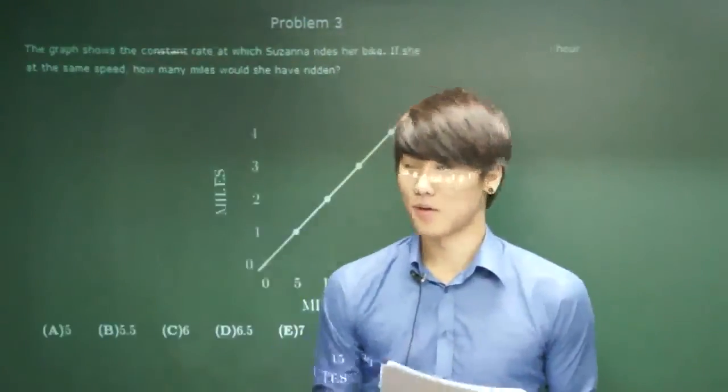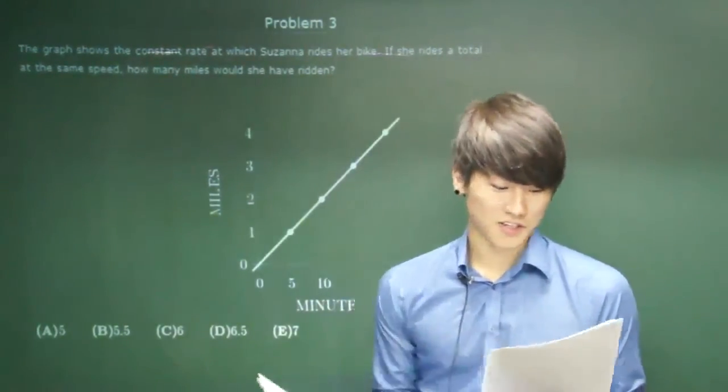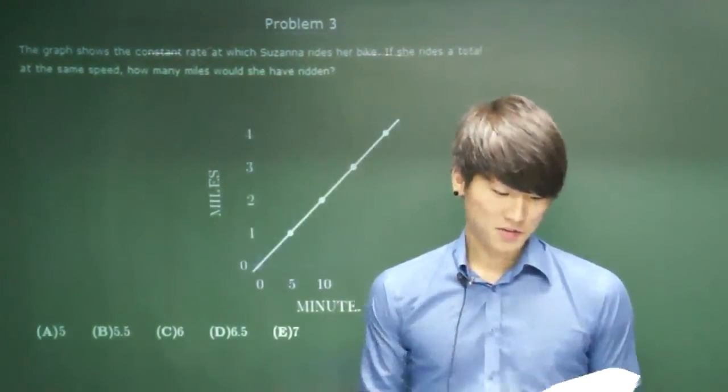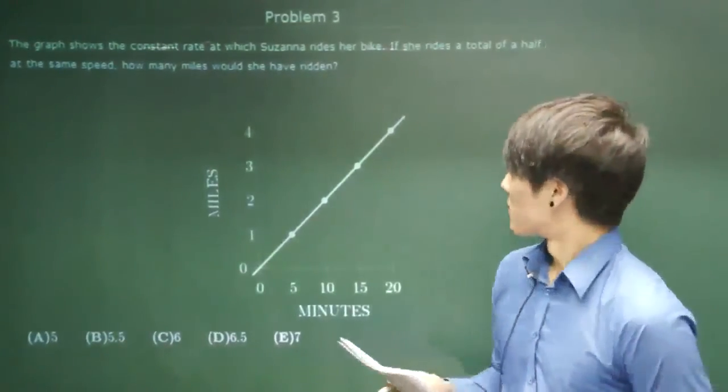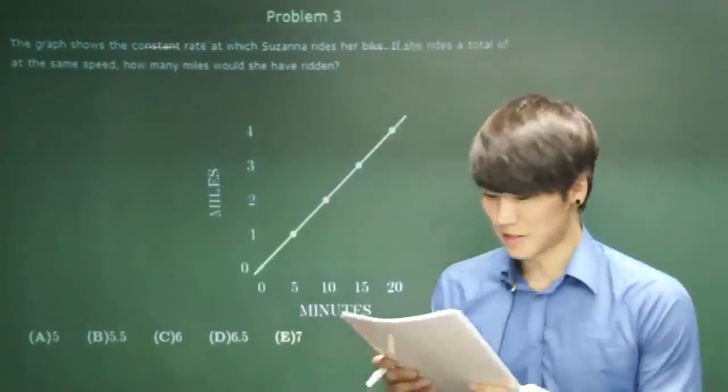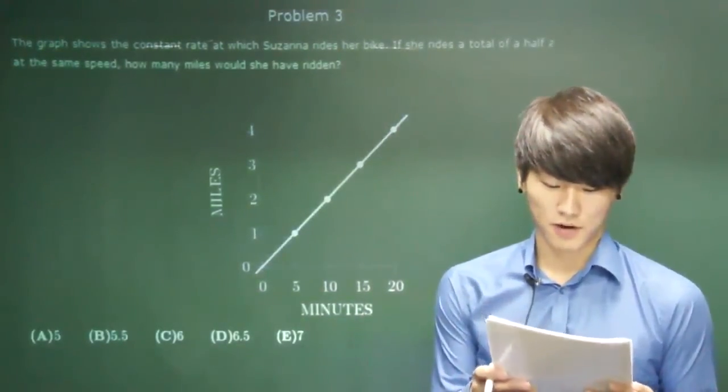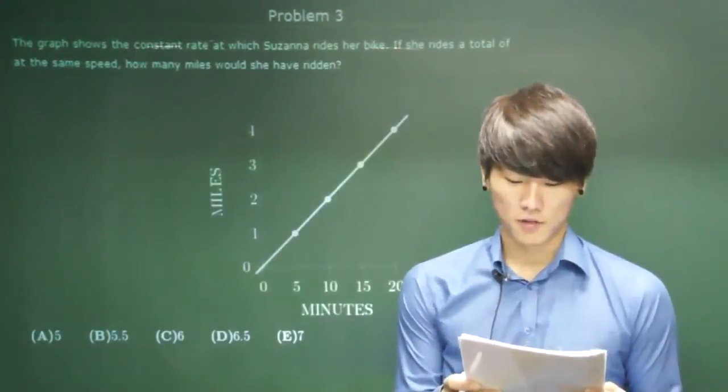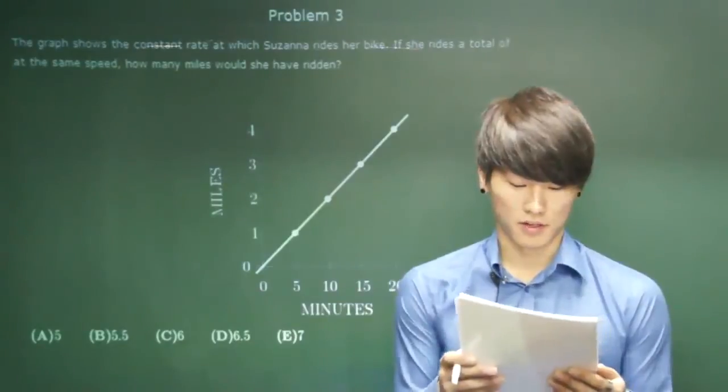Question number three. We have a graph. That's like a giveaway question. All you have to do is just look at the graph, know how to interpret it. For this one, they're asking, the graph shows the constant rate at which Susanna rides her bike. If she rides a total of half an hour at the same speed, how many miles would she have ridden?